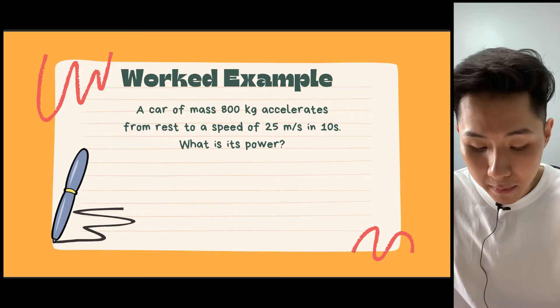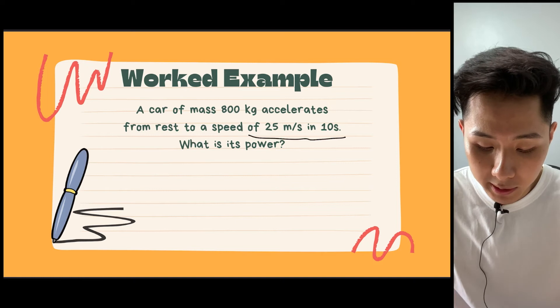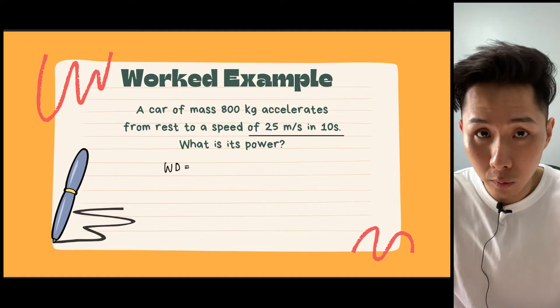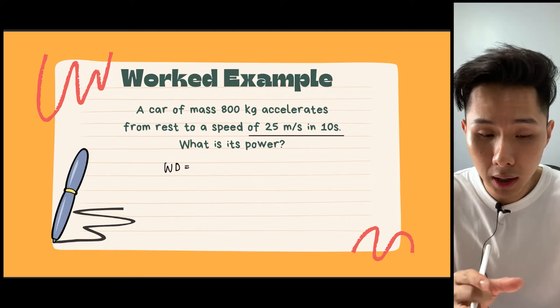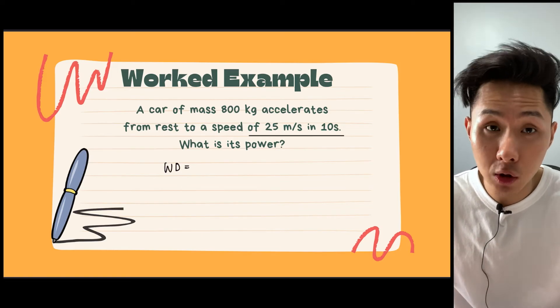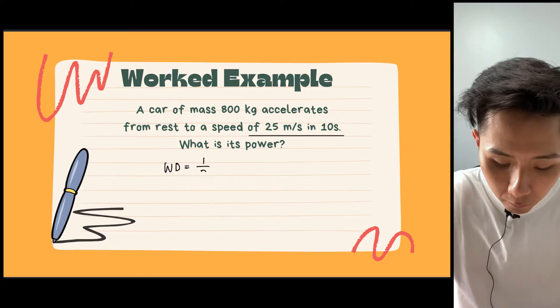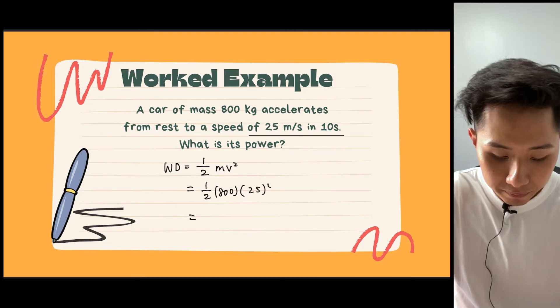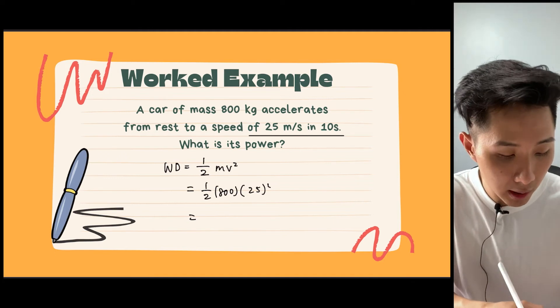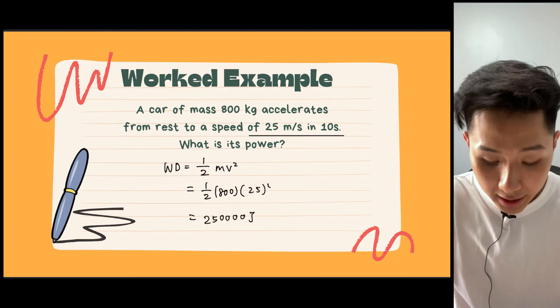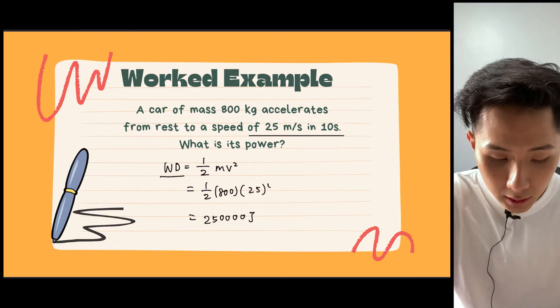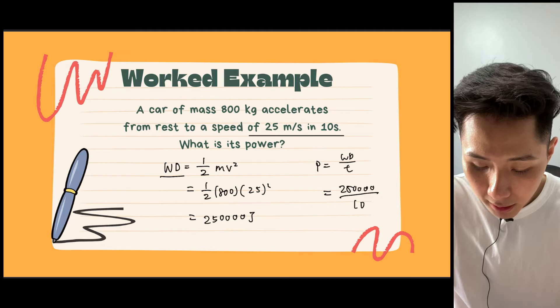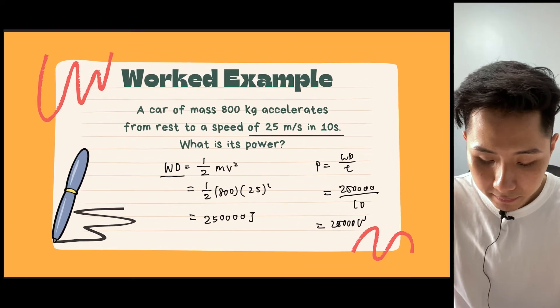So let's look into this work example. A car of mass of 800 kilograms accelerates from rest to a speed of 25 meter per second in 10 seconds. What is the power? Before we calculate the power, we need the work done. So work done is energy transfer. We know that the energy transfer here is from chemical energy in the fuel to kinetic energy of the car. So we just need to calculate the kinetic energy of the car to know how much energy has transferred. So we will use the formula half m V square equal to half multiplied by 800 times 25 square. So it will be 0.5 times 800 times 25 square. And I'm going to get 250,000 Joules. And that's not done yet. That's just the work done. To calculate the power, I'm just going to do work done divided by time, and I'll get 250,000 divided by 10, which will be 25,000 watts.